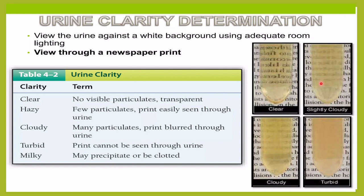Next comes hazy urine. In hazy urine, there are few particulate materials and we may not be able to read through the urine sample the prints very clearly. Then comes cloudy urine — yaha pe kaafi sare particulate matter hai, so print hum ko dikhta hai but blurred dikhta hai. That is called cloudy urine. And turbid urine is when you cannot read any print at all — the urine is so turbid ki hum ko koi print hi dikhta nahi.